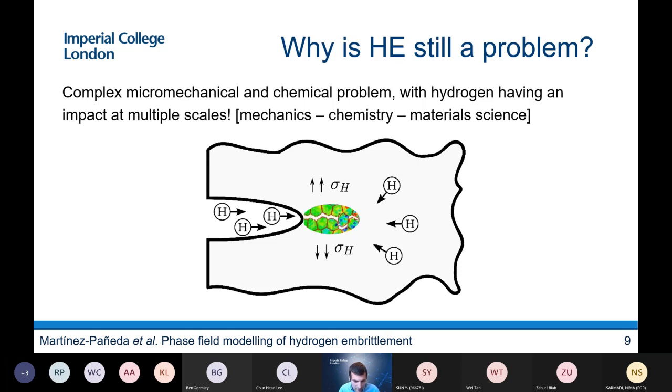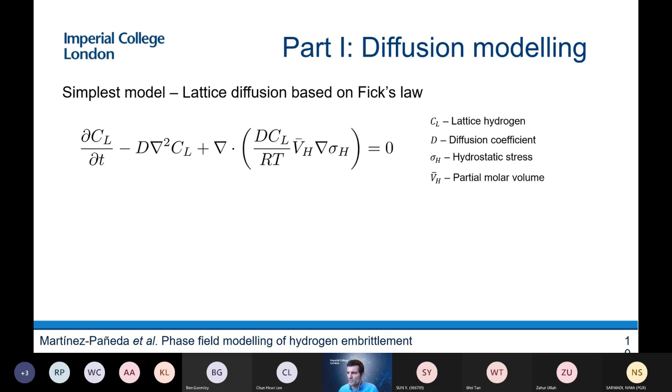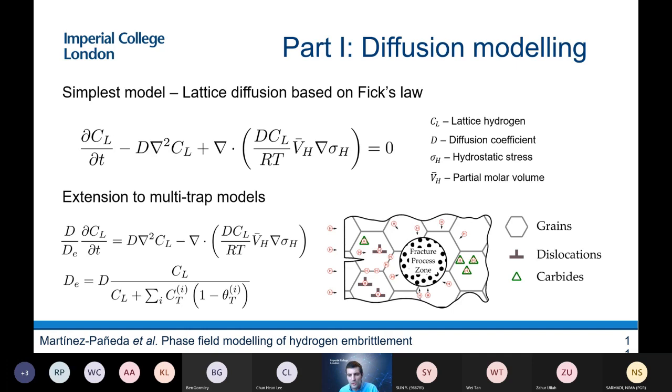So I tried to work on this. I tried to develop a suitable computational framework to predict when these hydrogen-assisted failures will happen. And this framework has several ingredients that I will try to walk you through. One is diffusion. You need to model how hydrogen diffuses within the metal. The standard or the most simple diffusion model is the one that you see in the slide, which is based on Fick's law. So it's an extended version of Fick's law. You can see that it depends on the gradient of the hydrostatic stress. So as I said before, the higher the hydrostatic stress, the more space there is for the hydrogen to accumulate.